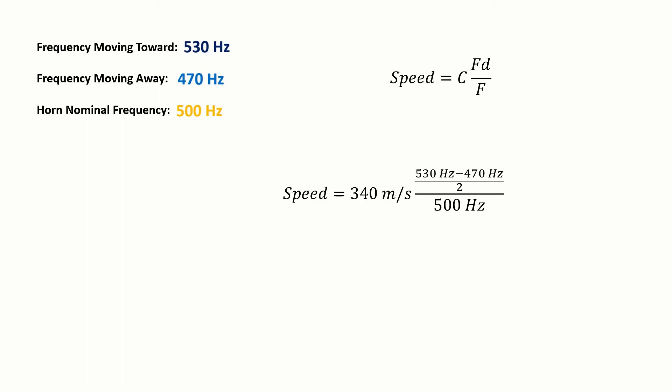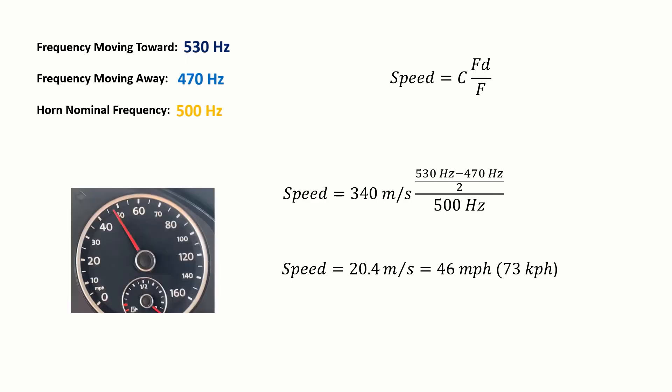If we run these numbers we come up with 46 miles per hour or 73 kilometers per hour, which is approximately how fast the car was moving at that time. And there you go — this is how the Doppler effect is computed. Thank you for watching, this concludes the demonstration of the Doppler effect. I would like to thank my colleague Jeremiah Ness for operating the camera.